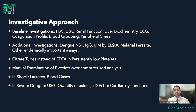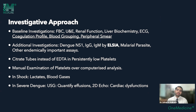Additional investigations include dengue NS1 antigen, IgG, and IgM. Avoid rapid card tests — they have very low sensitivity. Choose ELISA over rapid card tests. You can also investigate for other tropical diseases such as malaria parasite, given the overlapping endemicity of dengue and malarial parasites. An important point: if platelet counts are persistently low without matching clinical scenario, get a citrate tube sample. EDTA samples can cause platelet clumping, leading to falsely low platelet counts. Always prioritize manual examination — consult your pathologist to check for clumping or megakaryocytes, which are preferred over automated computer assays.